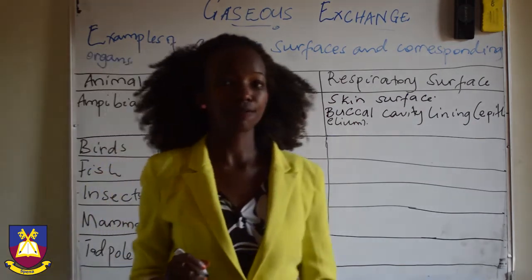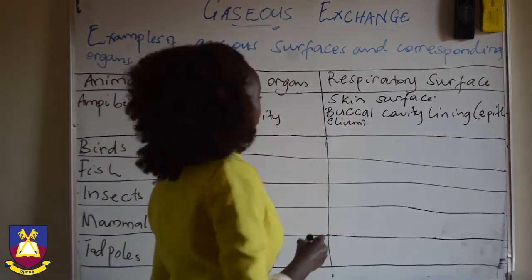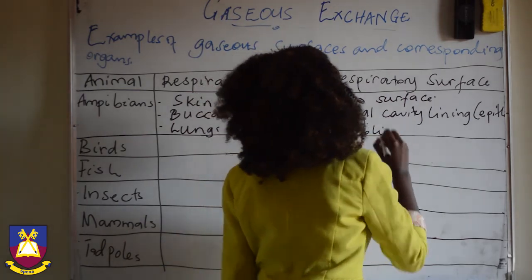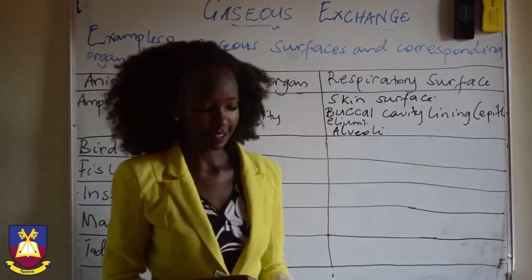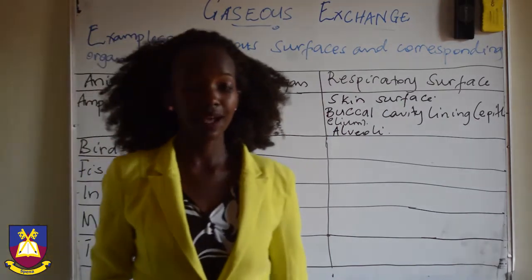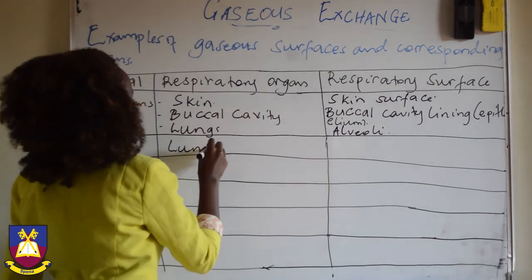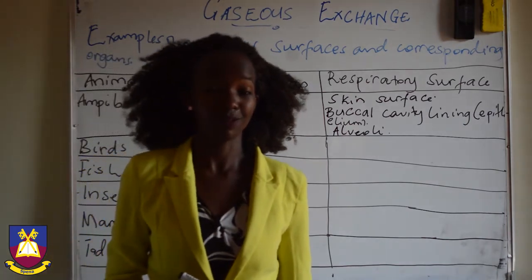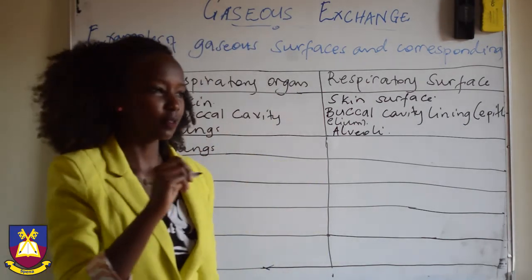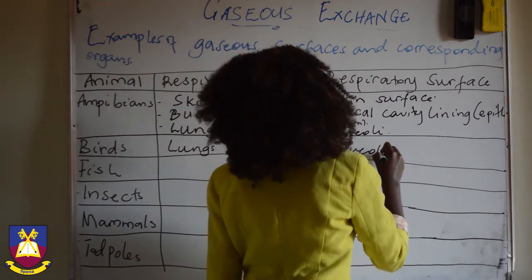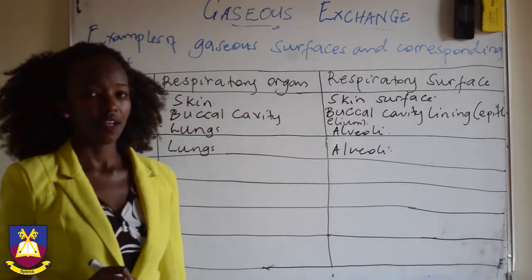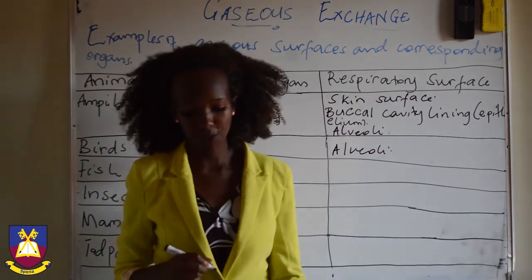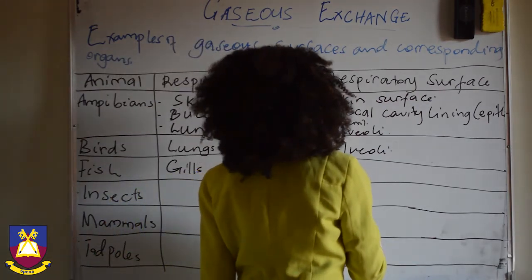The third organ is the lungs. Within the lungs, not every part is a respiratory surface — the specific surface is the alveolus. There are many alveoli, and we shall look at those in detail. Birds also use lungs as their respiratory organs; if you've eaten chicken you've seen bird lungs. The very part where gaseous exchange takes place in the lungs is the alveoli.